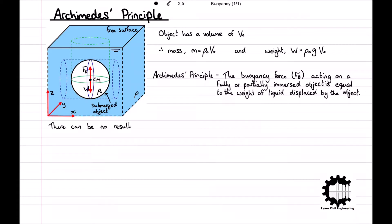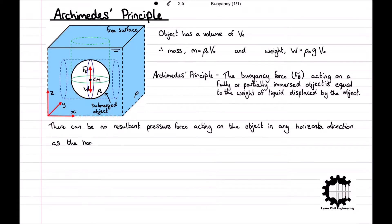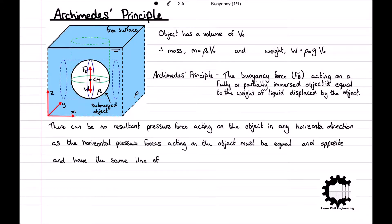First, it is clear that there can be no resultant pressure force acting on the object in any horizontal direction, as the horizontal pressure forces acting on the object must be equal and opposite and have the same line of action. We can prove this by drawing a vertical plane through the object, dividing it into two parts that have the same area of projection, as we can see by the blue lines in the diagram. The pressure force acting on the right-hand surface of the object is equal to the horizontal pressure force Fh acting on the area of projection, and the same applies for the left-hand surface of the object.